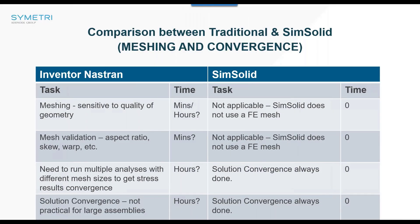Another major task in traditional software like NASTRAN or ANSYS is meshing. If the geometry isn't perfect, you get meshing errors. You also have to check mesh quality — aspect ratios, for example — and run three or four analyses to confirm solution convergence. SimSolid doesn't require a mesh at all; it performs automatic convergence in the background. You simply bring in the geometry, apply loads and constraints, and press run — and it's very fast.